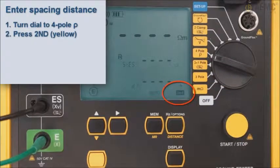Next, turn the dial to the 4-pole Row setting. To enter the spacing distance, press the yellow button, labeled Second. The symbol Second appears on the screen, indicating the buttons will now perform the actions labeled in yellow. Press the Distance button. The word Distance appears on the screen, and the first digit in the Distance field blinks, indicating it is in Edit mode. Use the Up and Right buttons to navigate through this field and make selections.